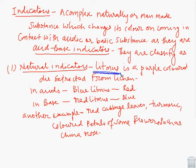Simple example you heard from the lower classes about litmus. It is a purple colored dye extracted from lichen. In acids, the blue litmus turns into red, and in base, the red litmus turns into blue.